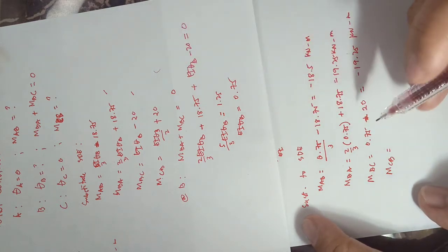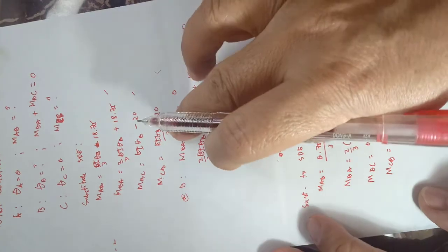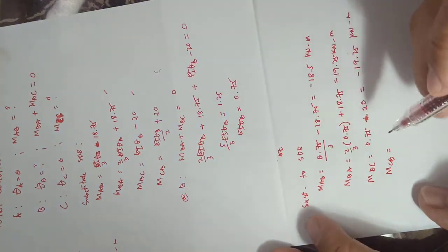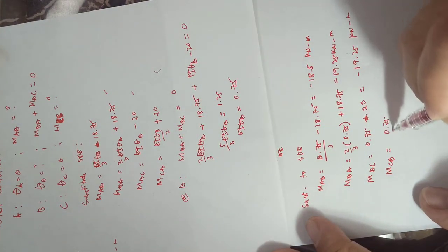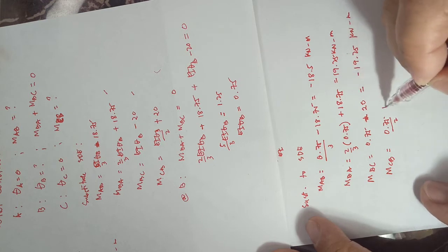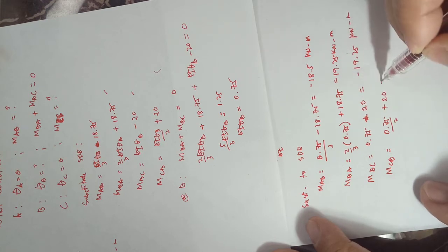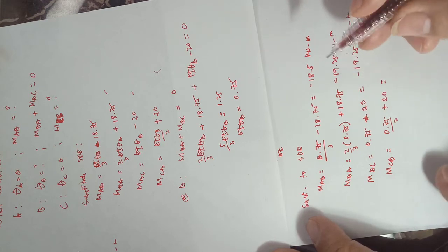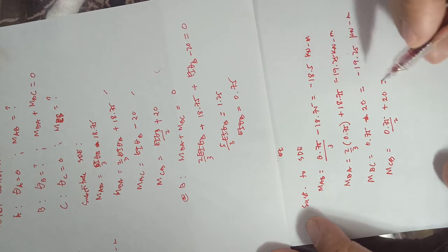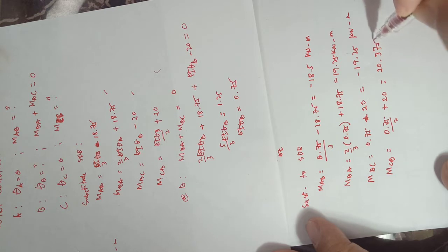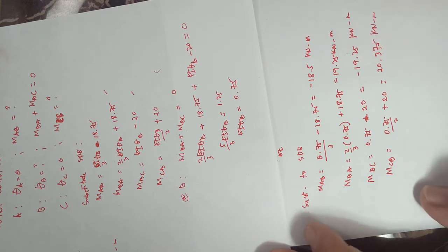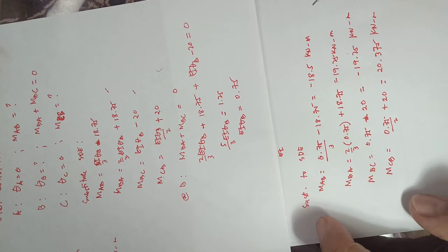And then our M_cb is equal to two-thirds of M_cb, EI·θ_b over 2, so that would be 0.75 over 2, plus 20, equal to 20.375 kilo-newton meters. You can also check that at joint B the sum of the end moments M_ba plus M_bc equals zero.